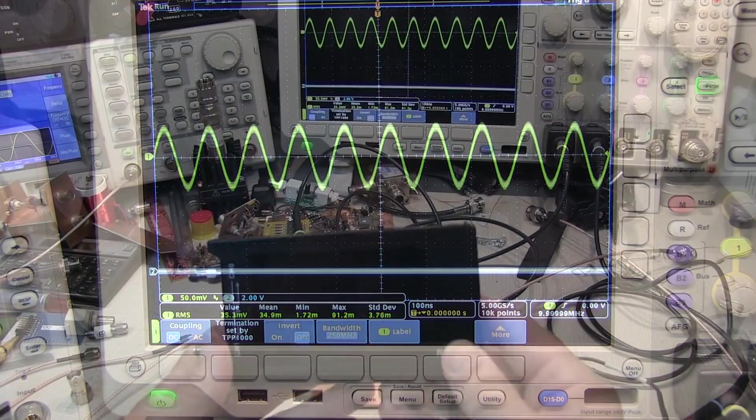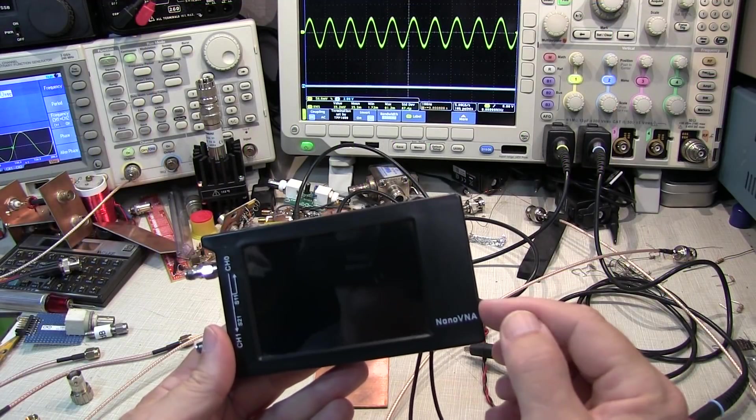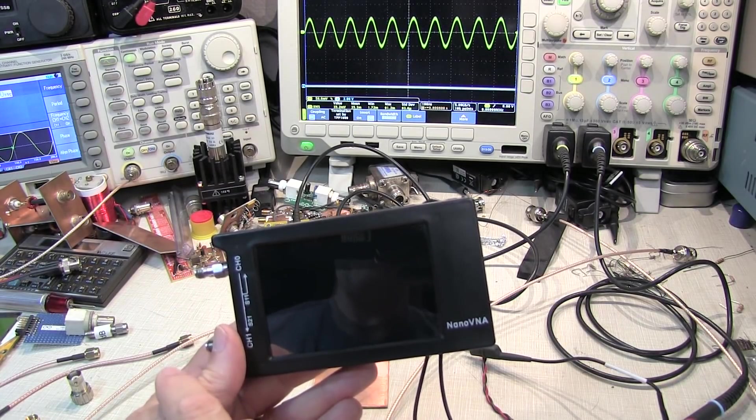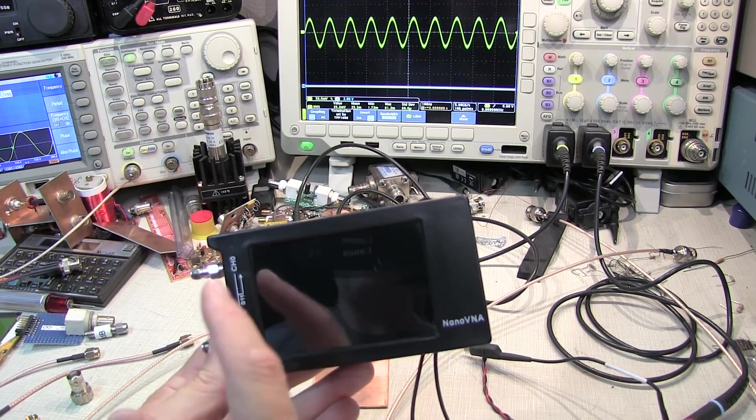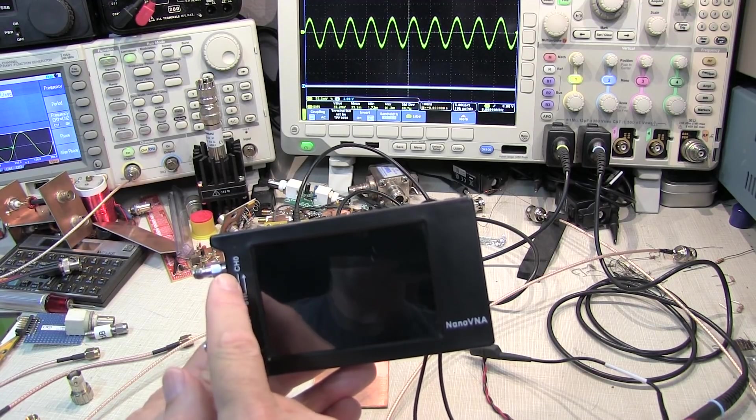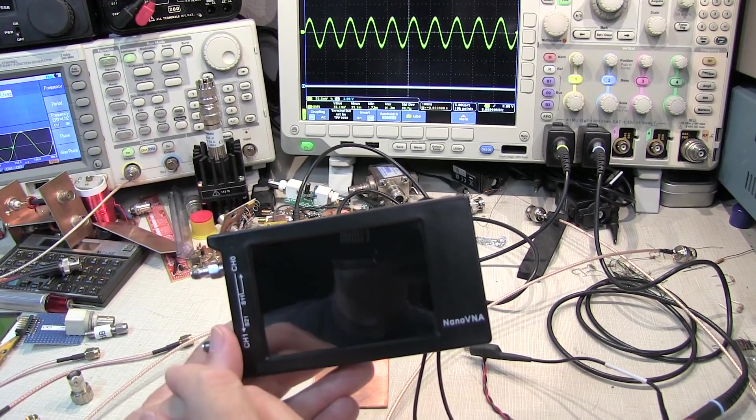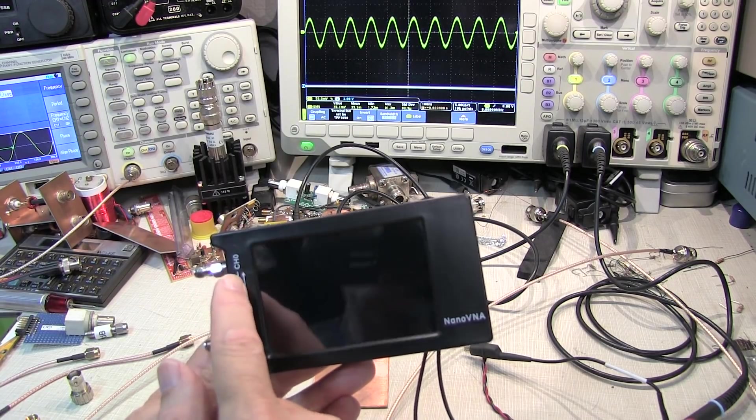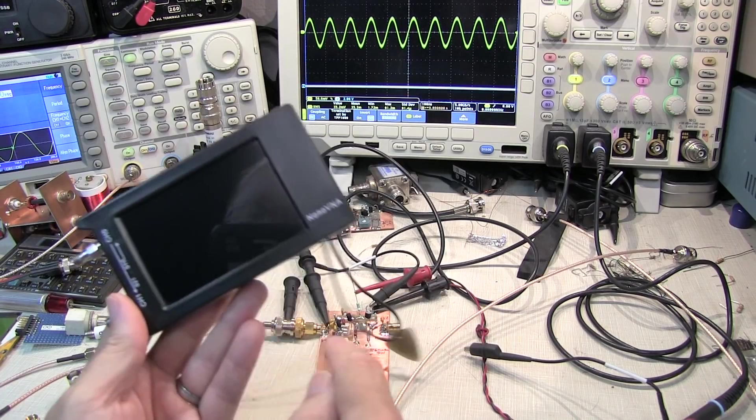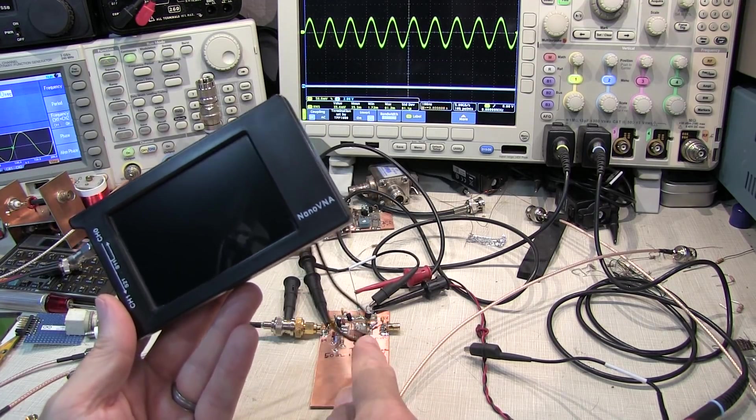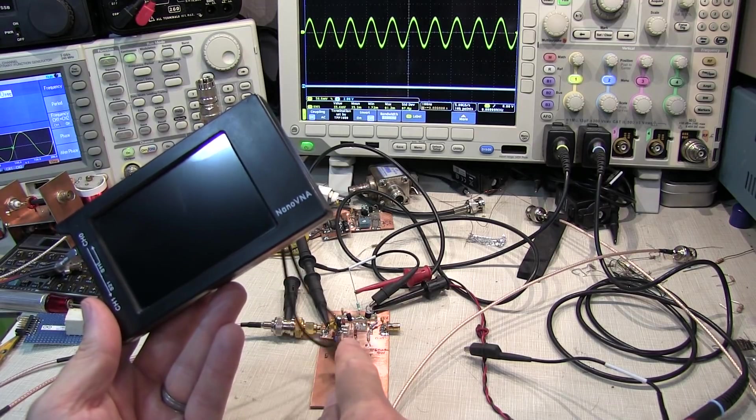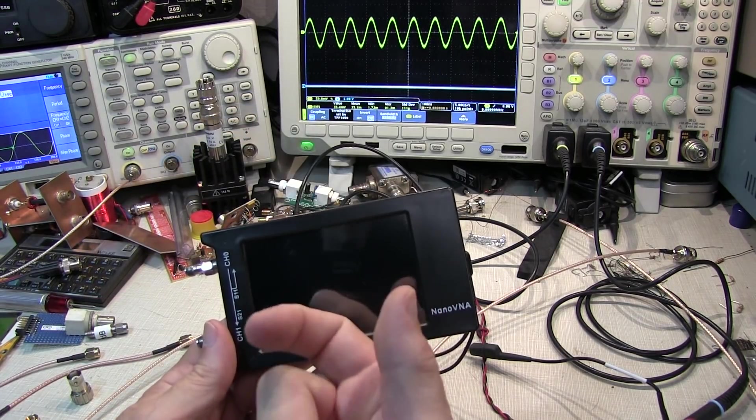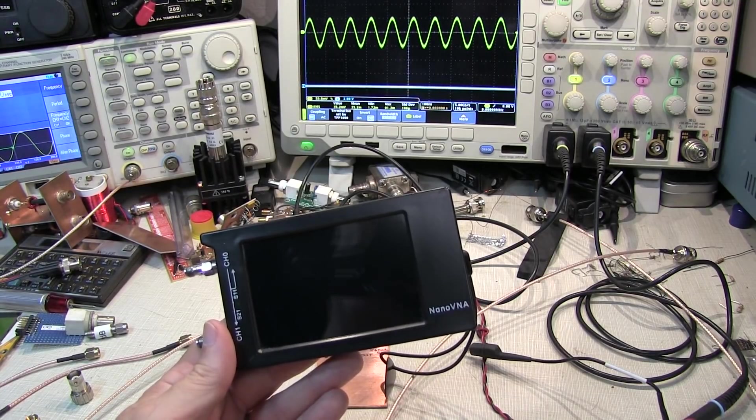So the problem turns out to be that the NanoVNA H and H4, its RF output is a fixed amplitude square wave. The square wave doesn't matter so much, but the fact that it's a fixed amplitude and in this frequency range is on the order of about 600 millivolts peak-to-peak, that amplitude is too large for the input of our termination-insensitive amplifier and is driving it into its nonlinear operating range, which essentially breaks the feedback that determines or sets what the input impedance is, and therefore it's reading incorrectly.